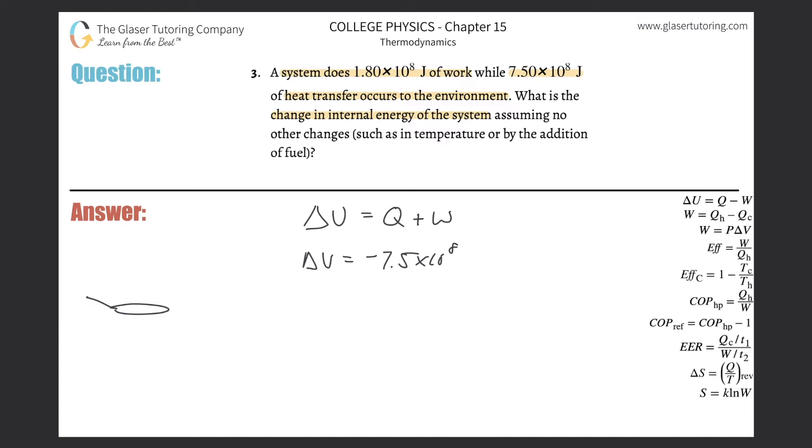Then I say, okay, plus now my work. I'm going to go back—a system does 1.8 times 10 to the 8 joules of work, and I have to think about, well, what does that mean?